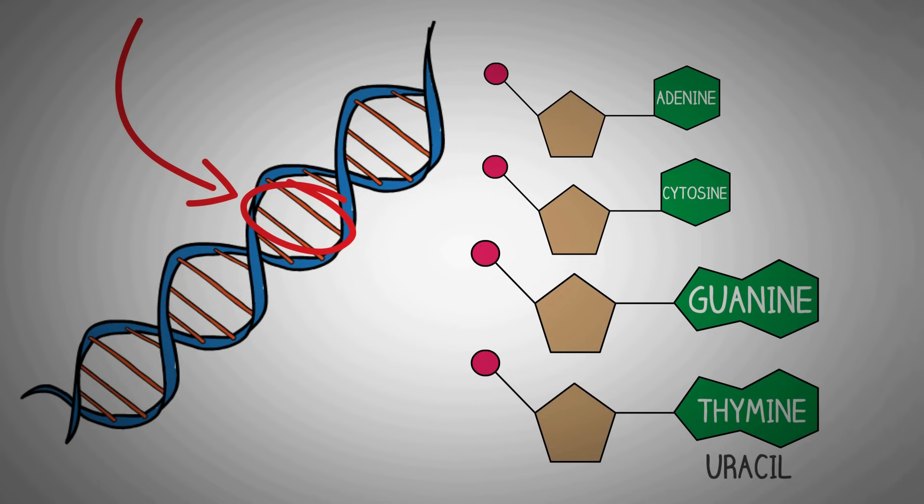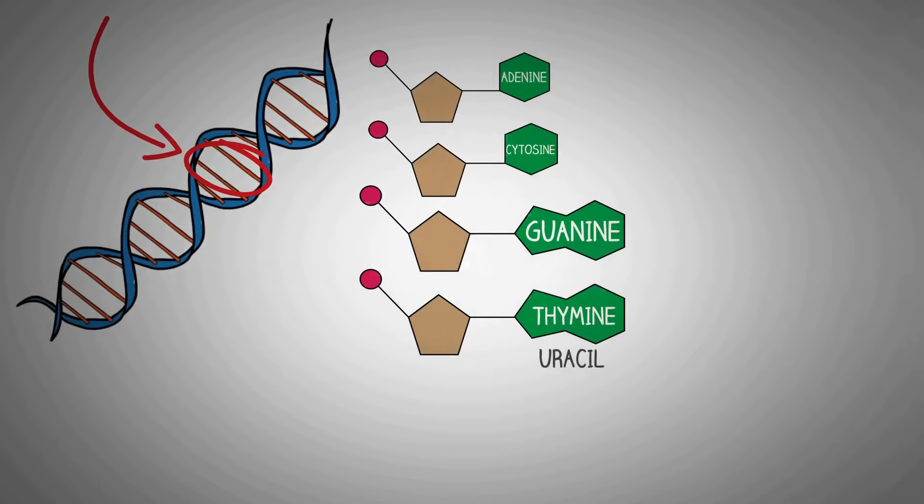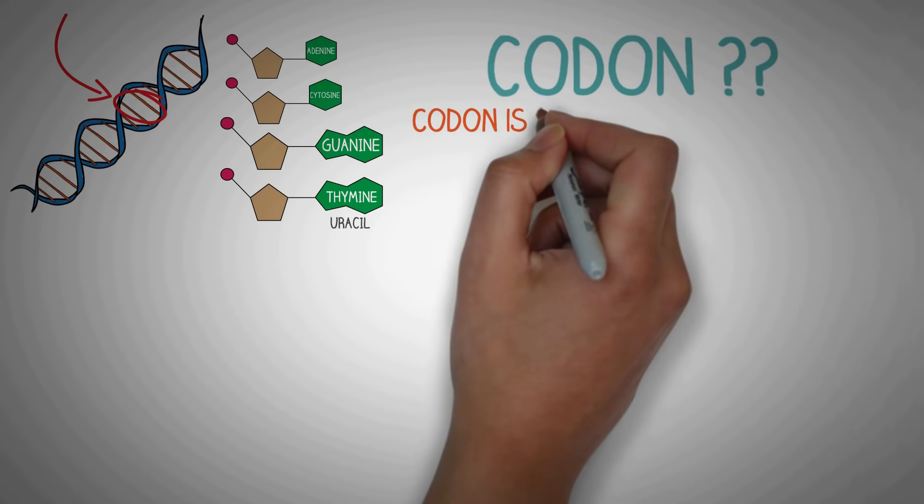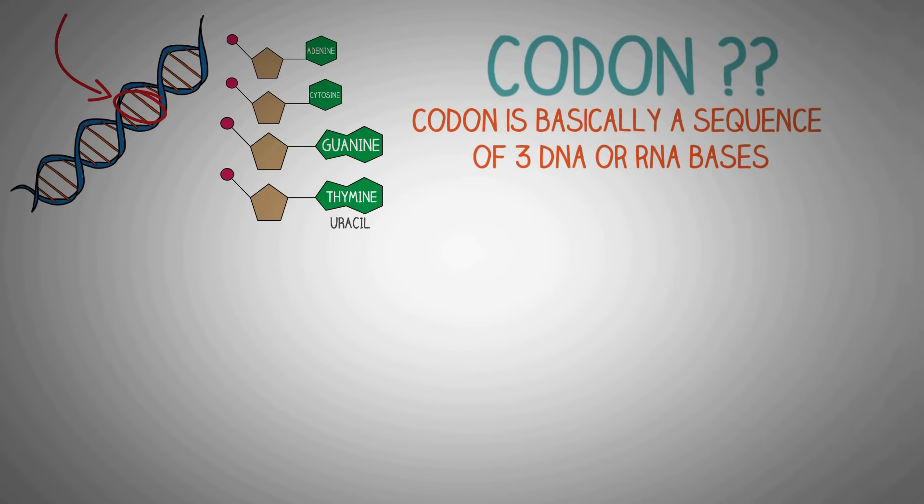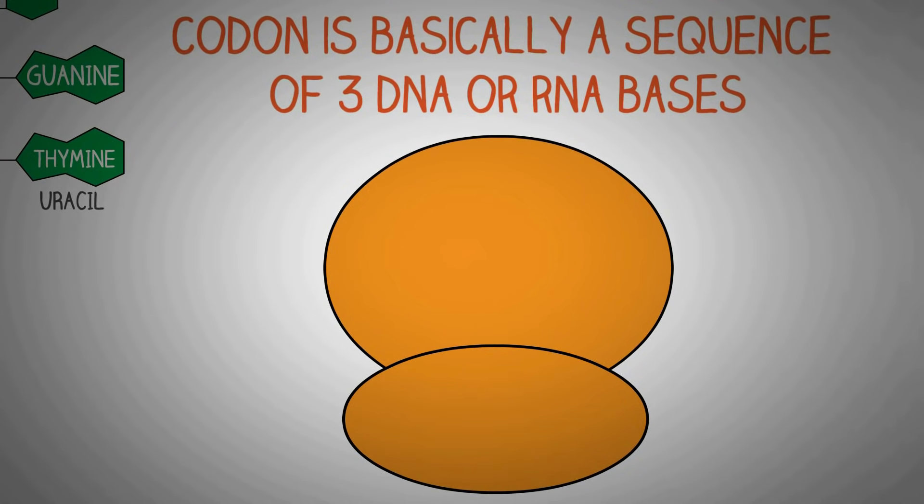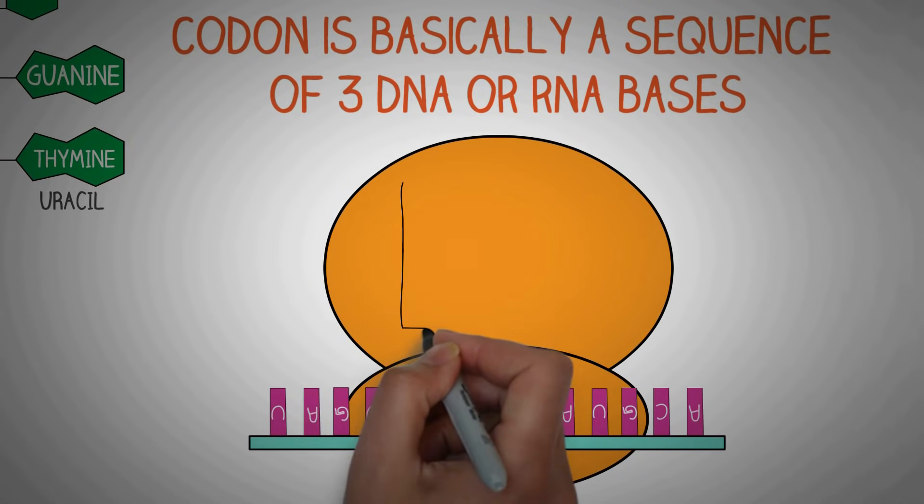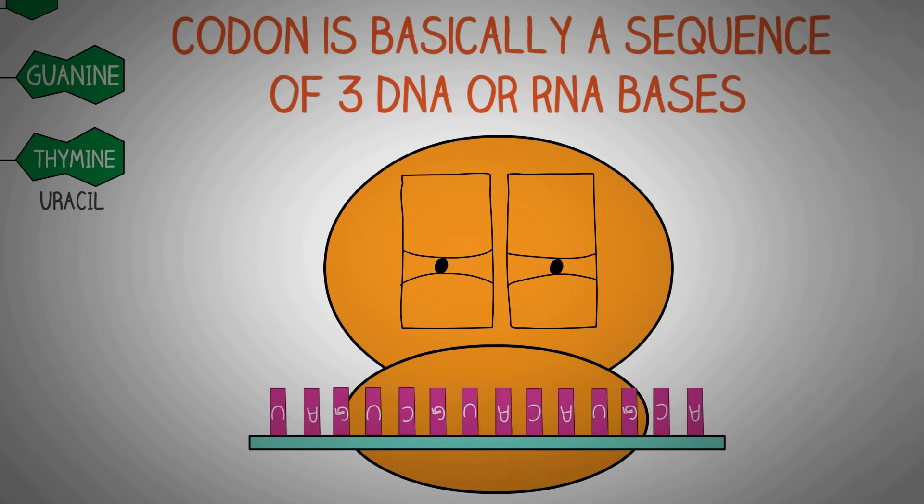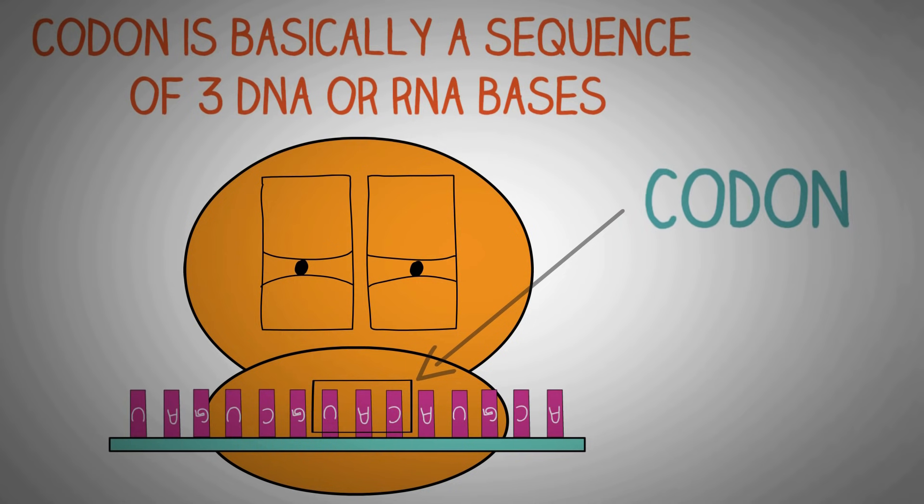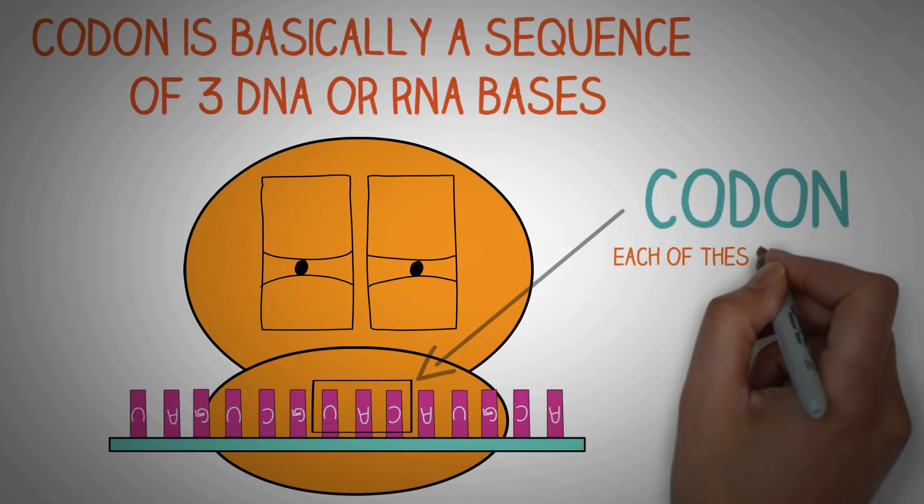Now the cornerstone to understand the process of translation is to understand what is a codon. A codon is basically a sequence of three DNA or RNA bases. When a mRNA goes inside a ribosome, the ribosome does not read individual bases, but rather these sequences of three bases which are known as codons. Each of these sequences of three base pairs corresponds to a specific amino acid.